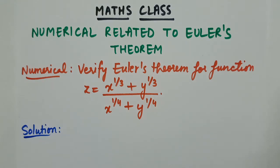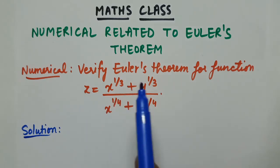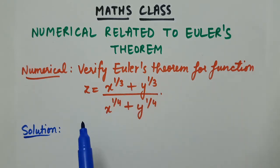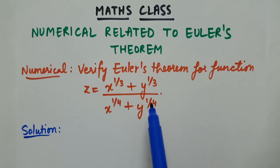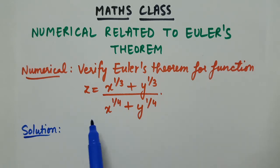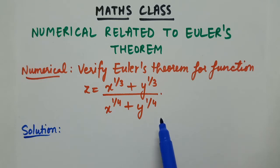Welcome to Maths class. Today we are going to do a numerical related to Ehlers theorem of homogeneous functions. The numerical is a verification — it states: verify Ehlers theorem for the function z = (x^(1/3) + y^(1/3)) / (x^(1/4) + y^(1/4)).